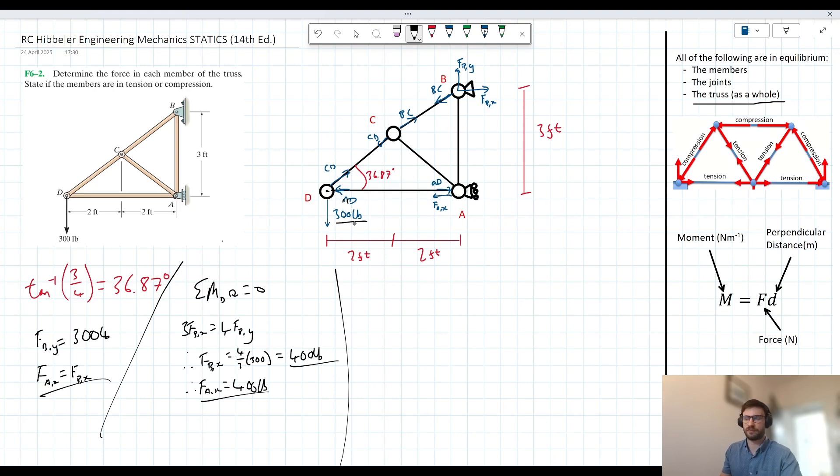So we know that this 300 pound force is countered by the vertical component of CD. So we can say sum of the forces in the Y are equal to zero at D. Therefore, what's acting down, so 300 is equal to what's acting up. So we can say CD sine 36.87. Now we can rearrange this. We can say CD is equal to 300 over sine of 36.87, which when we bung in our calculator, gives us a value of 500 pounds, a nice neat value there for CD.